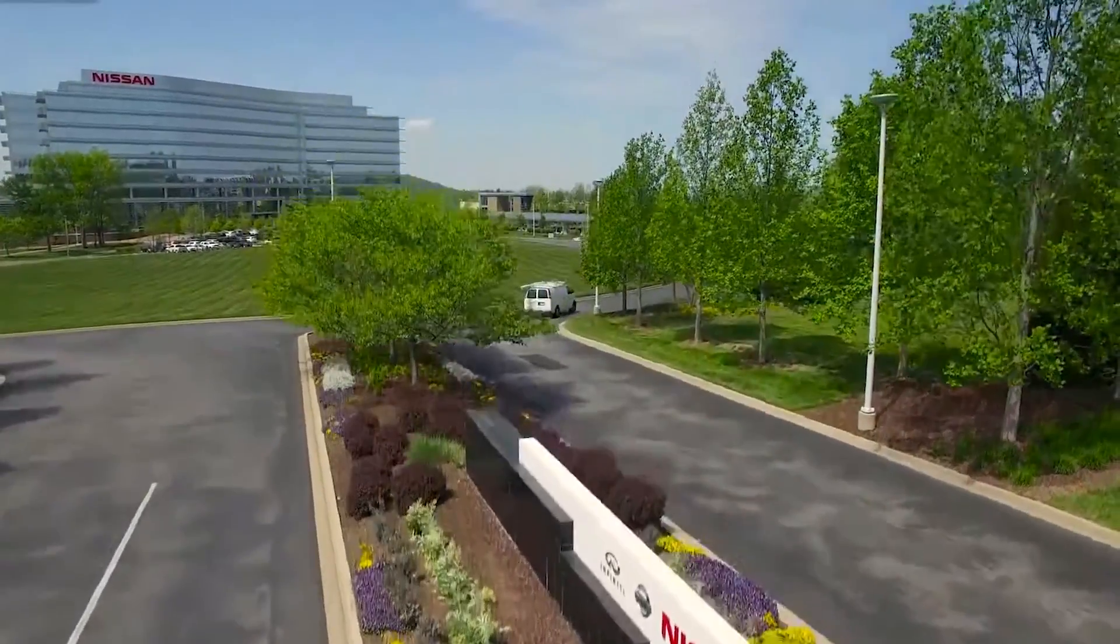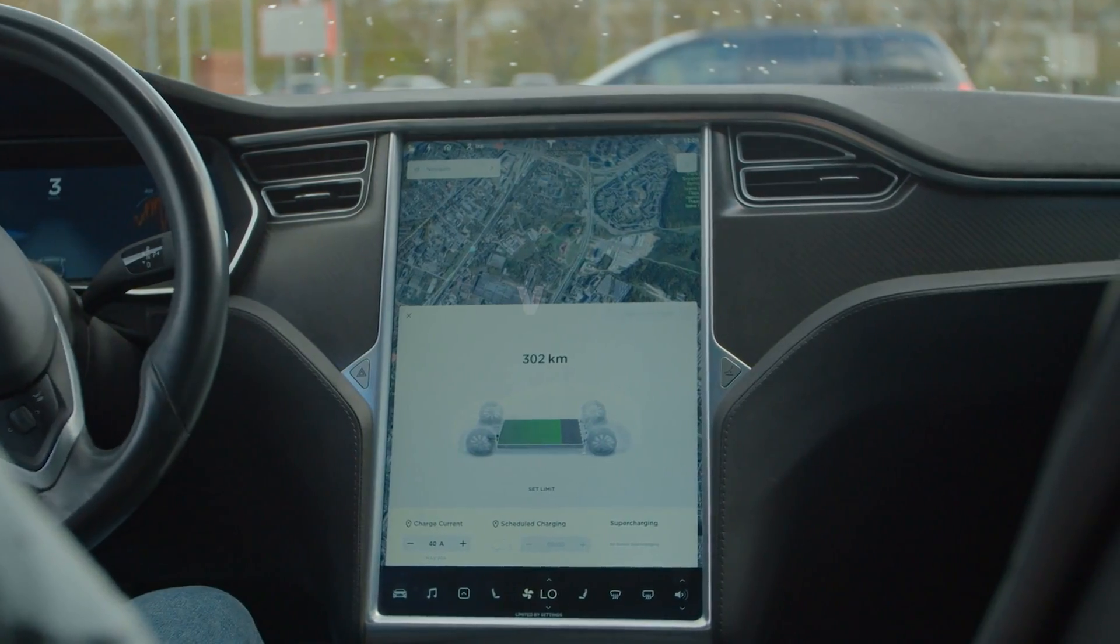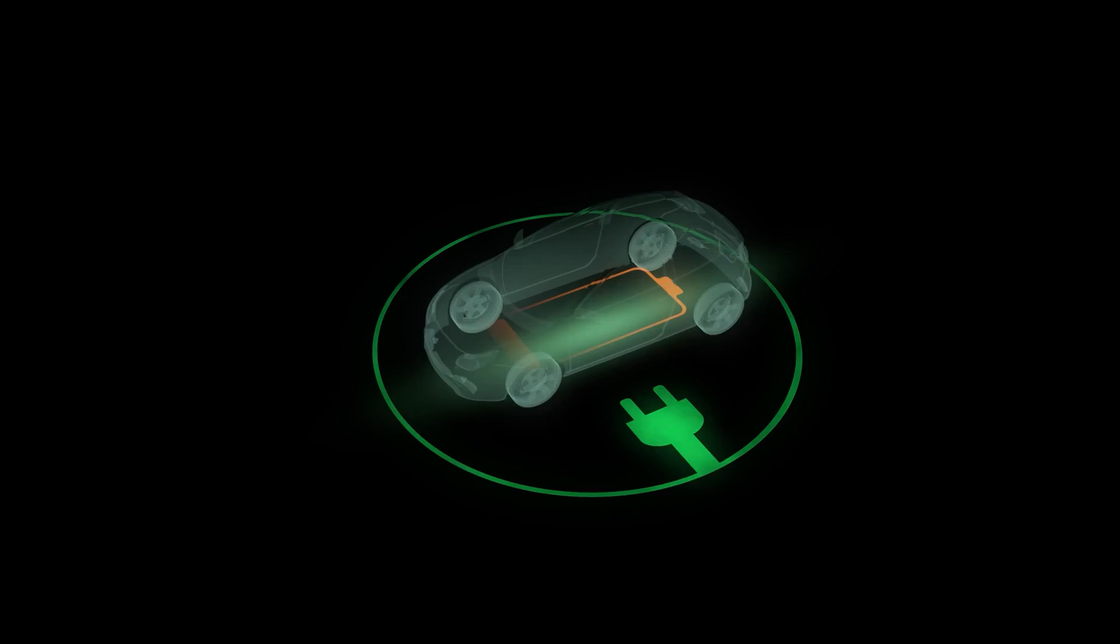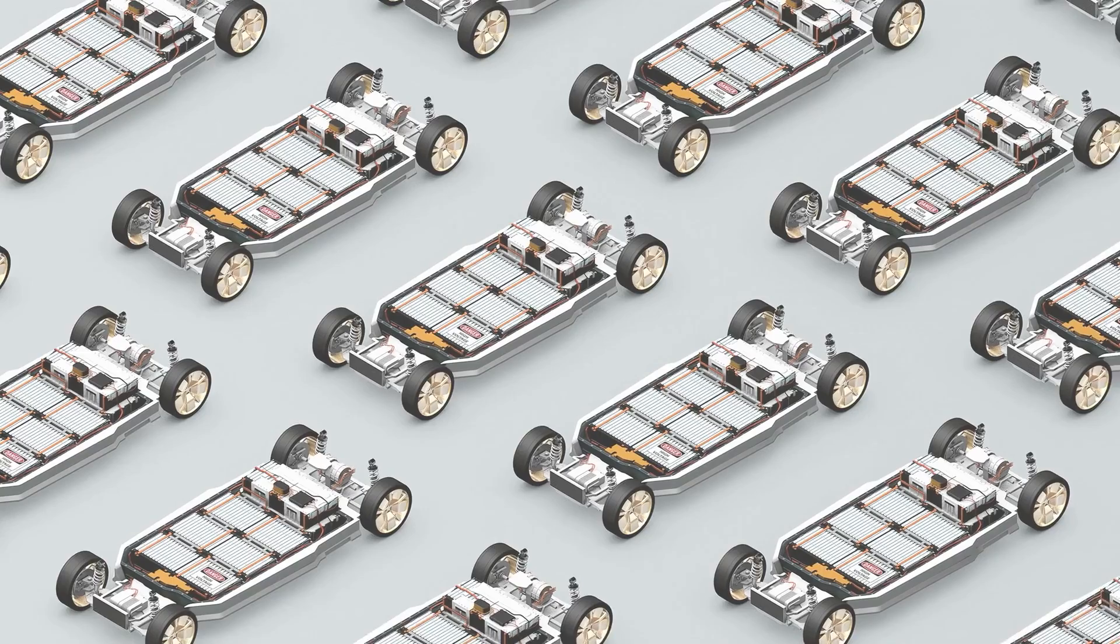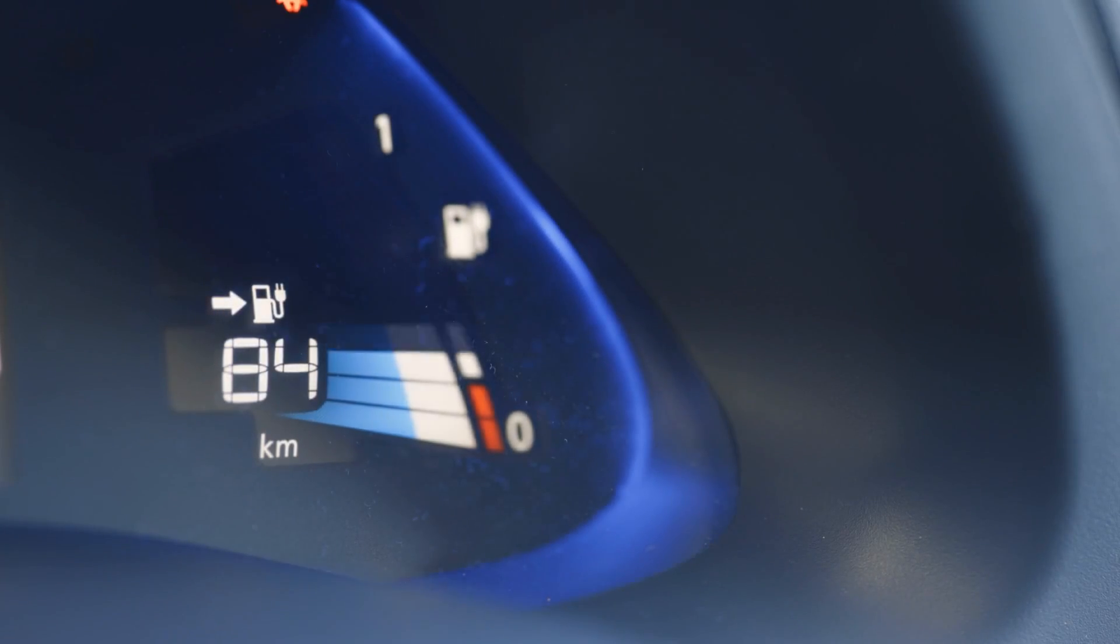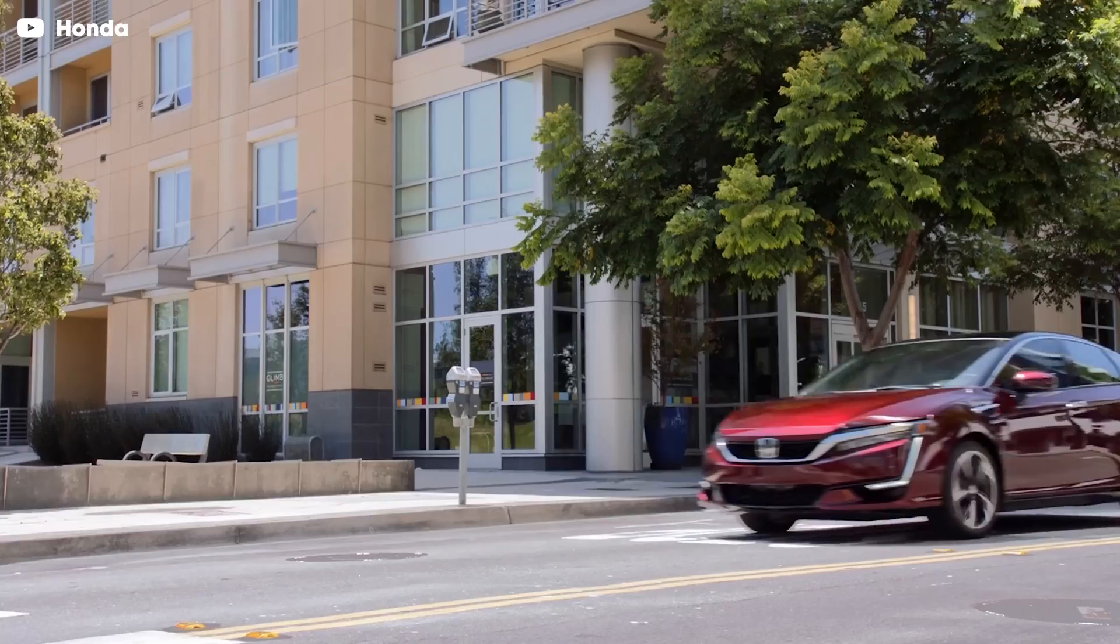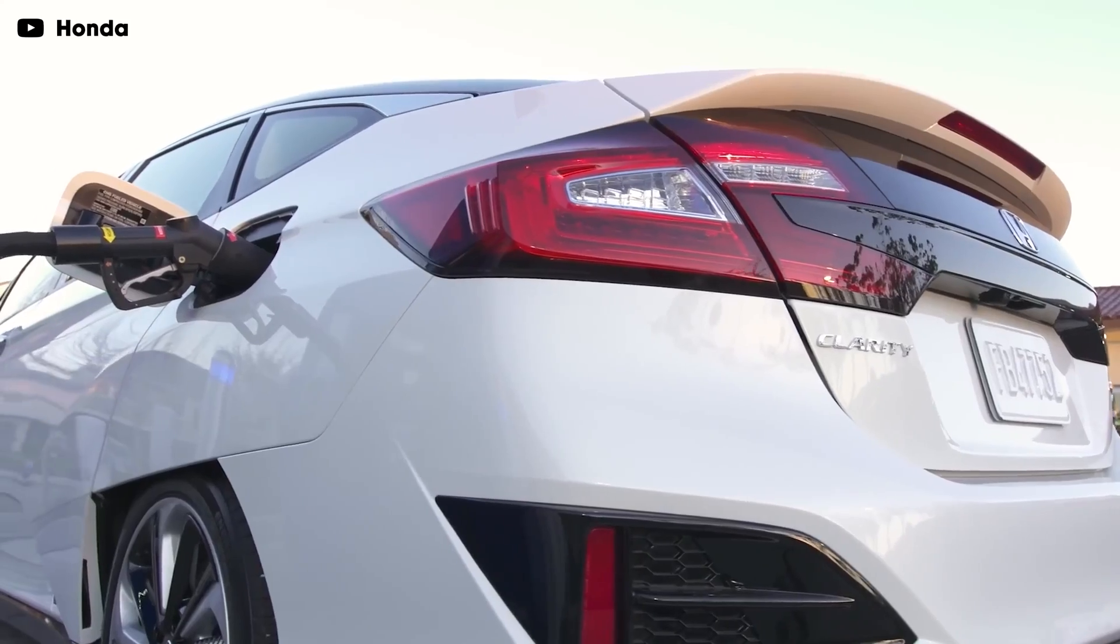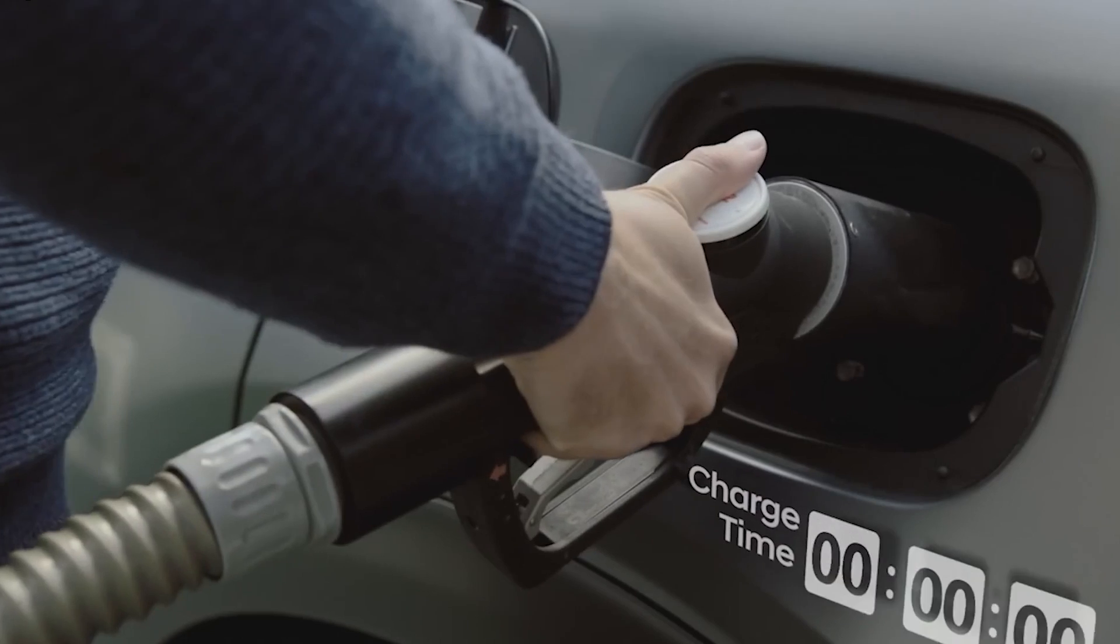Nissan's decision to shift away from EVs can be attributed to a few key factors. One primary concern is the limited driving range and the relatively long recharging times associated with battery electric vehicles. Despite significant progress in battery technology, range anxiety remains a barrier for widespread adoption. Hydrogen fuel cell vehicles, or FCVs, on the other hand, offer longer driving ranges and faster refueling times, making them a viable alternative for customers who prioritize convenience.